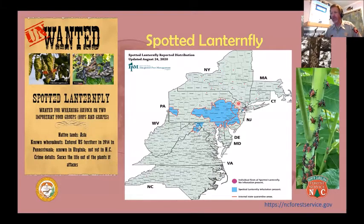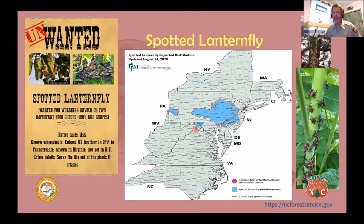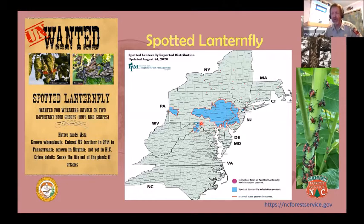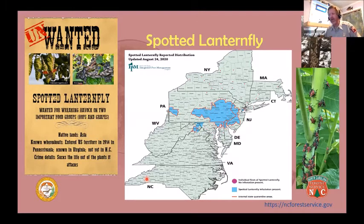The spotted lanternfly was first found in Pennsylvania in 2014, and in the last six years it's spread across Pennsylvania, into New Jersey, Delaware, Maryland, and about two years ago it was found in Frederick County, Virginia. It's since moved from there up into West Virginia — it's moving kind of quickly. It was found once in North Carolina, actually in Buncombe County, but they found no infestation in the area.